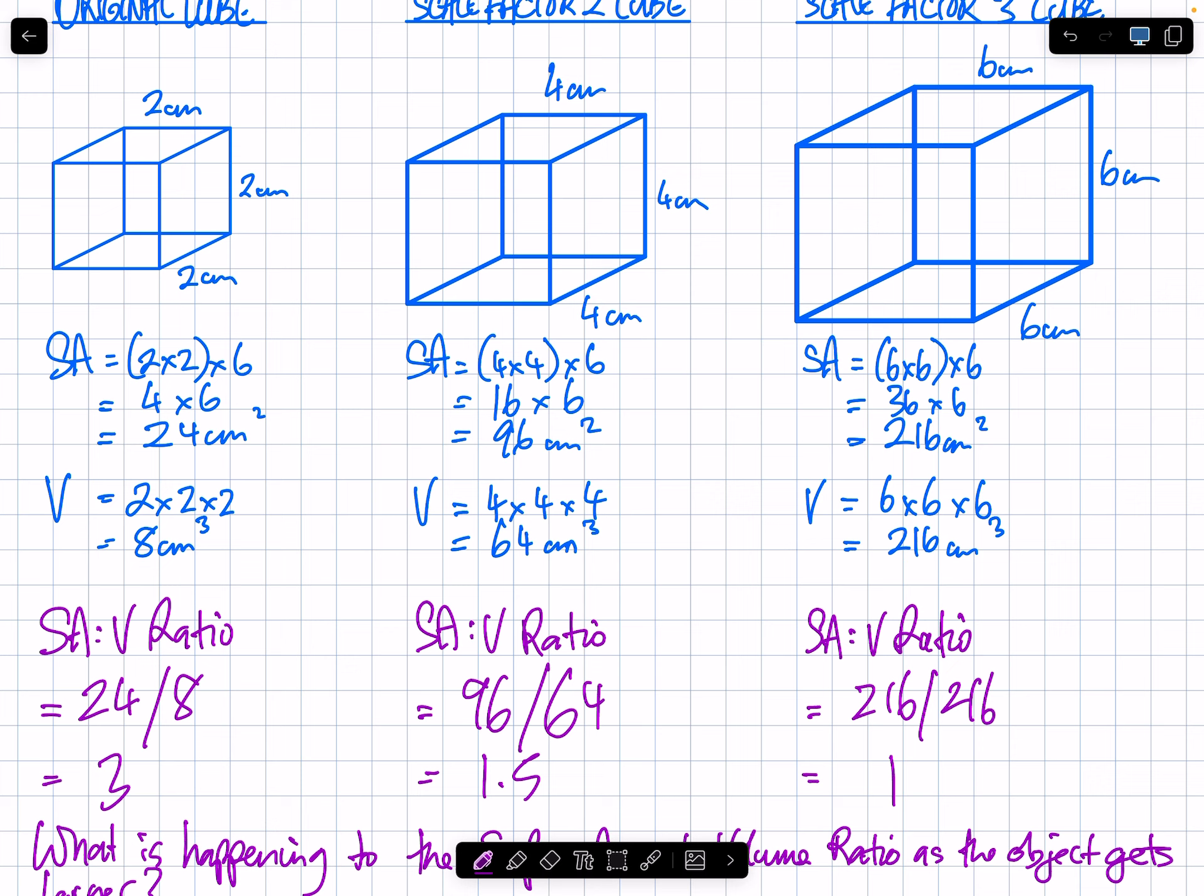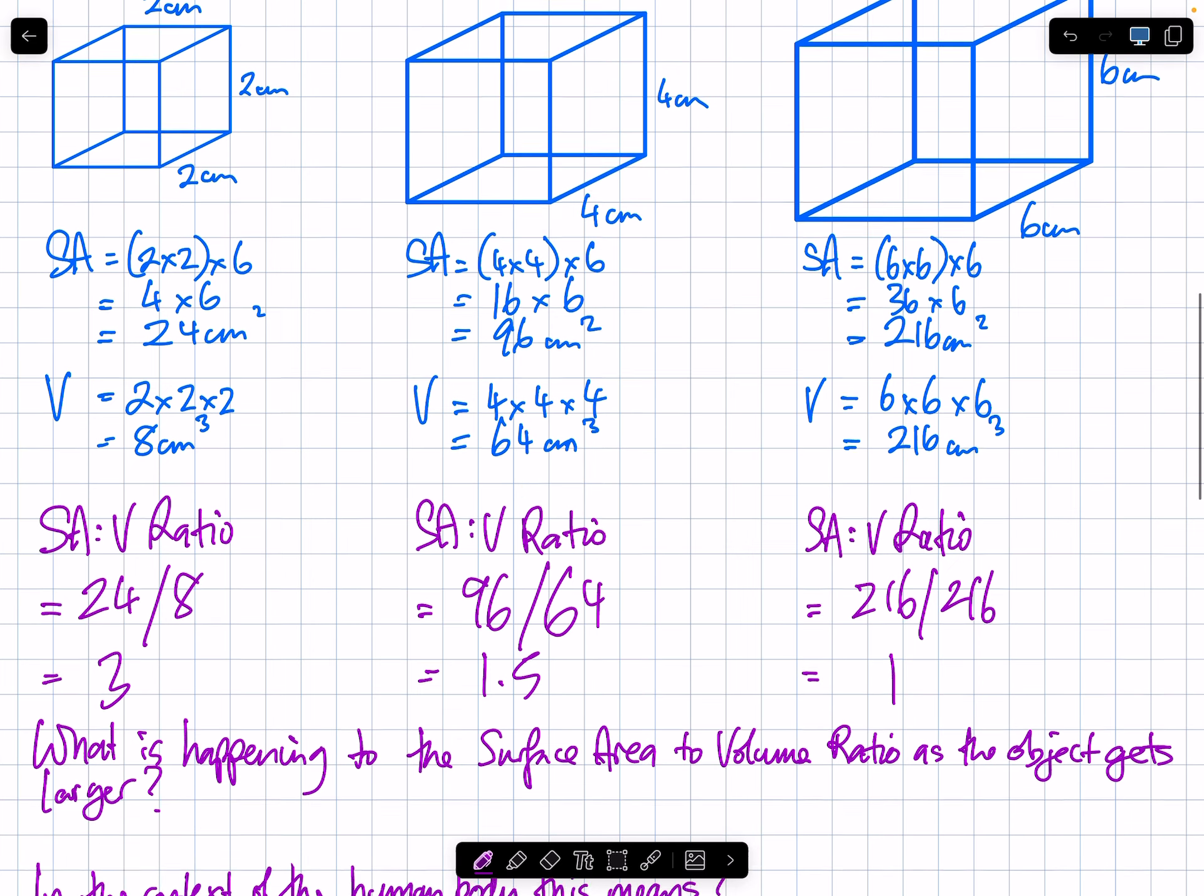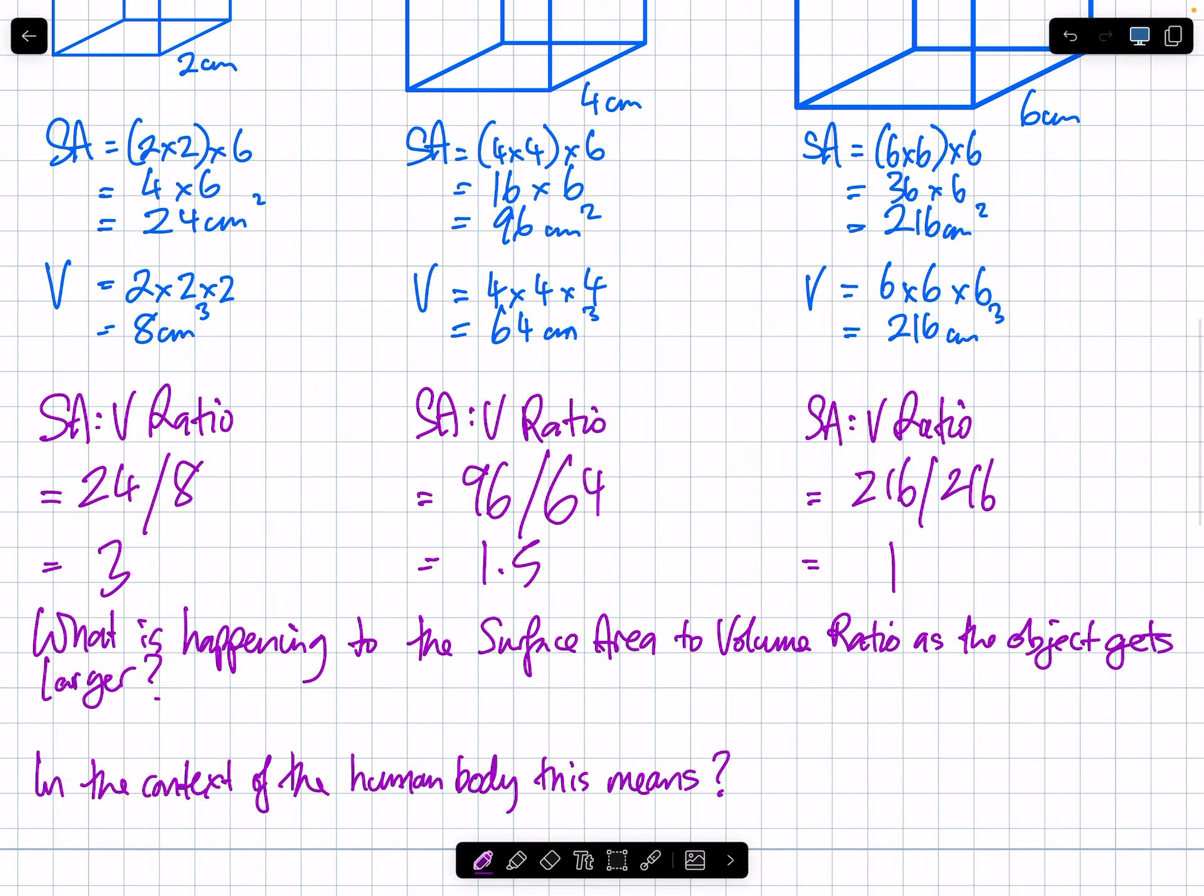Does that mathematically sort of suggest why babies suffer from heat more? Because they've got heaps of skin for their body. You're going to experience that in graph. What is happening in the surface area to volume ratio? As the objects get larger, it gets smaller.